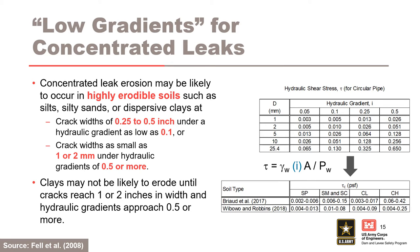Hydraulic shear stress is the parameter that drives initiation, and it is a function of hydraulic gradient, unit weight of water, and the pipe or crack geometry. The top table illustrates how the hydraulic shear stress increases with both increasing hydraulic gradient and pipe diameter. The hydraulic shear stress is then compared to a critical value. Critical shear stress is a difficult parameter to estimate, and the range is often an order of magnitude or more, as shown in the bottom table.